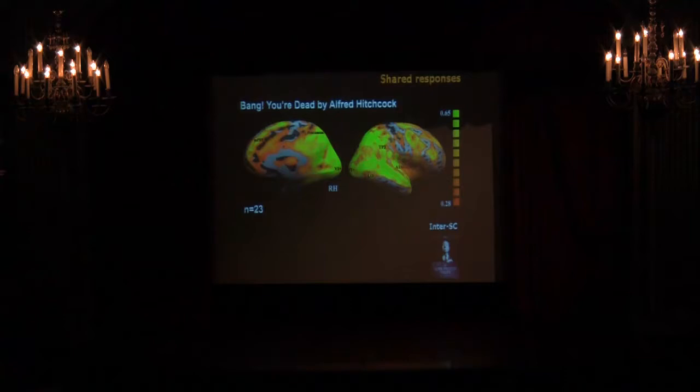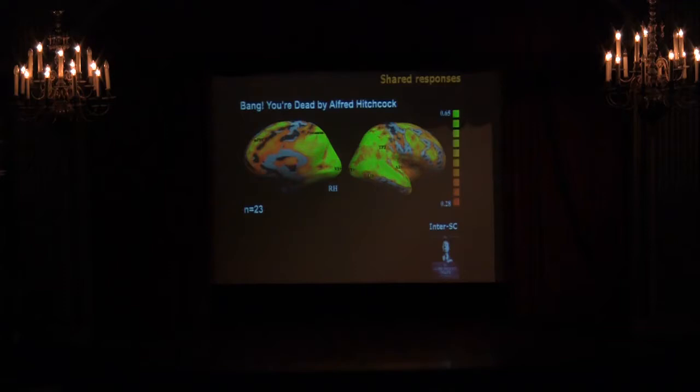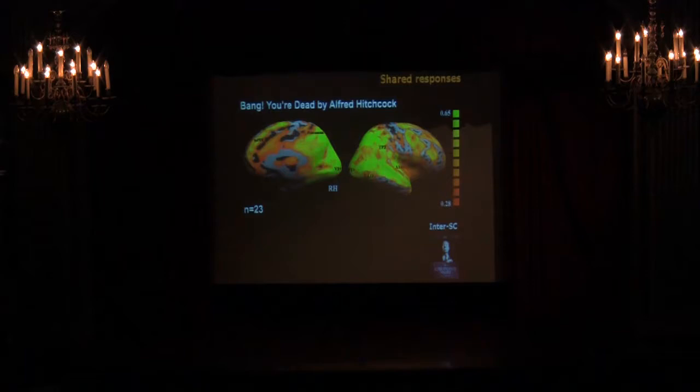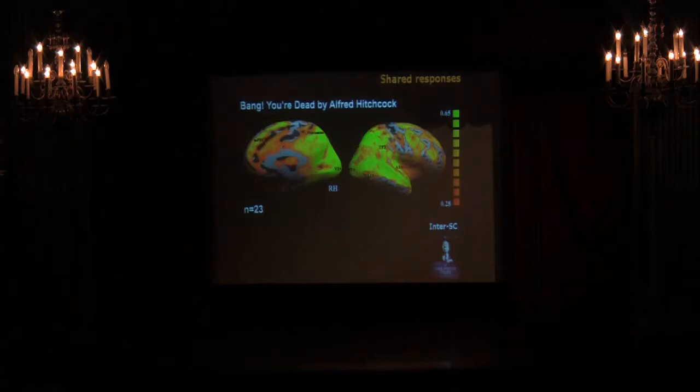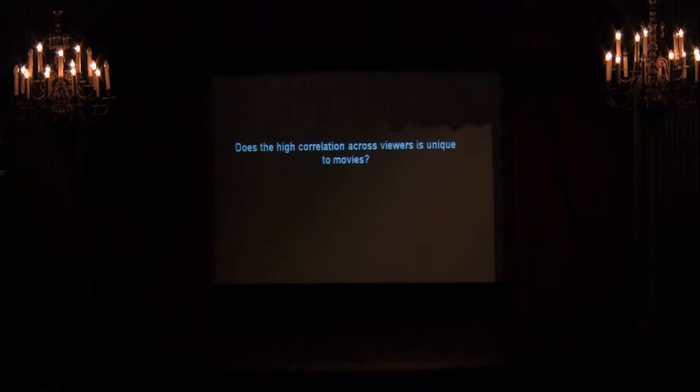The best example we have is a Hitchcock movie. About 65% of the cortex showed reliable responses across all observers — including the entire occipital cortex, entire parietal cortex, most of the temporal cortex, and many frontal areas. Hitchcock was known for his capacity to take control of the viewer's responses, and we see the neural correlate of that: all subjects responding in the same way while watching the movie.